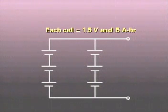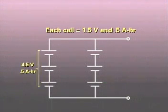Since voltage in series is additive but current is not, the first vertical string in this example yields a voltage rating of 4.5 volts with 0.5 ampere hours, the current capacity of each cell.